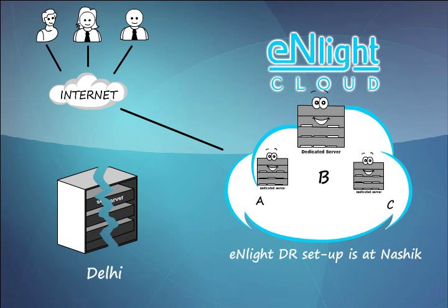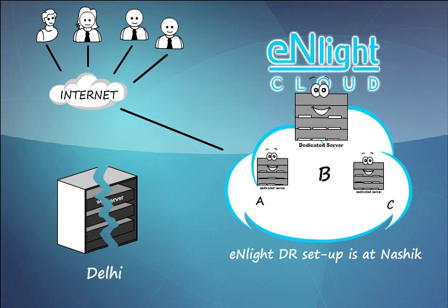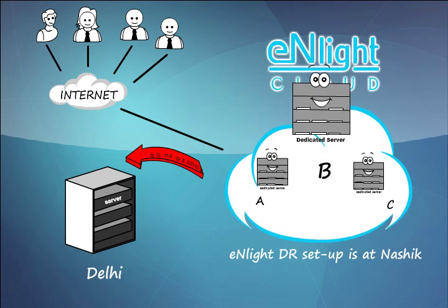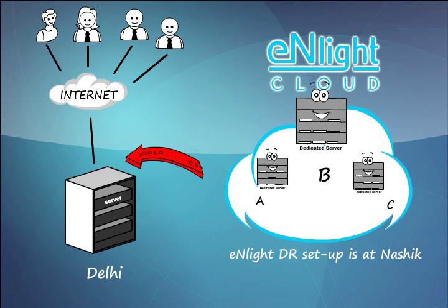N-Lite auto-scales resources as per the usage and the increase in the number of users. Once the main site is up again, all data is restored and all users are redirected automatically, while N-Lite automatically scales down the resources.